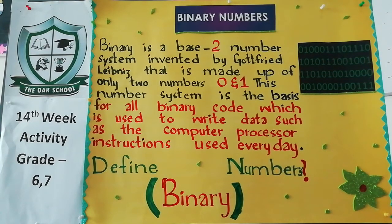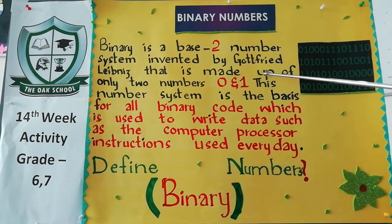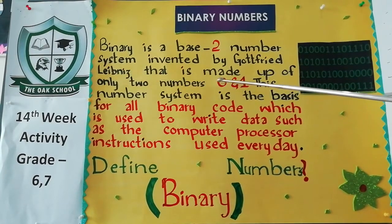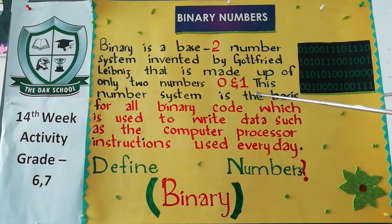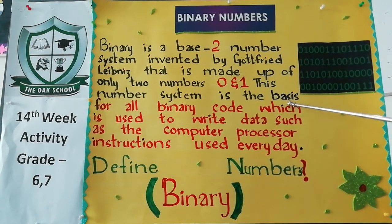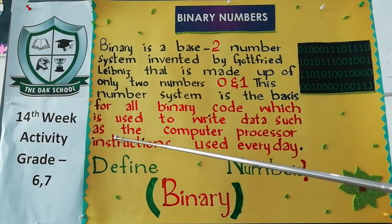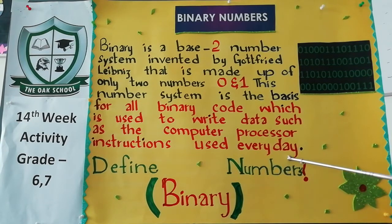Binary numbers kisay kahte hai? Binary is a base 2 number system invented by Godfrey Leibniz that is made up of only 2 numbers: 0 and 1. This number system is the basis for all binary code, which is used to write data such as the computer process instructions used every day.